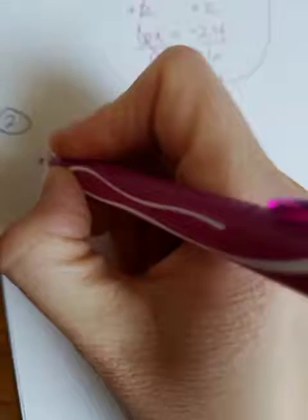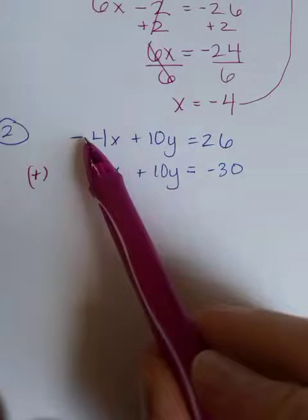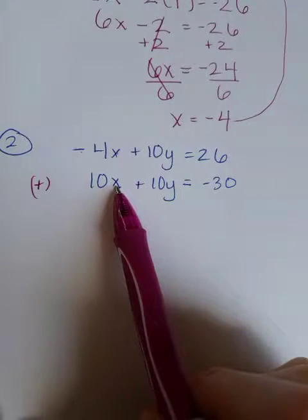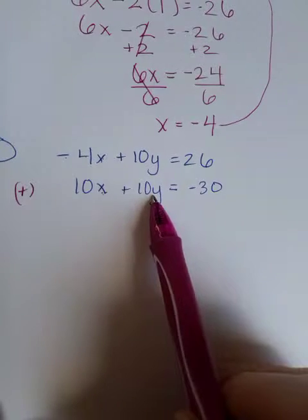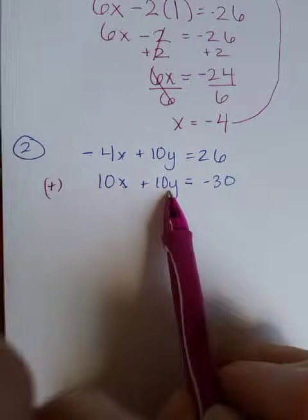Now, also remember we are always adding these together, and so I want you to stop and look for a second. If I add negative 4x and a 10x, do those give you 0? No. Is a 10y plus a 10y 0? No. So this is a little different than number 1.